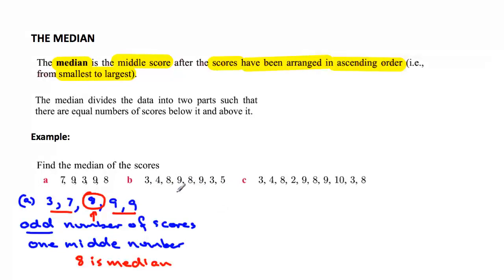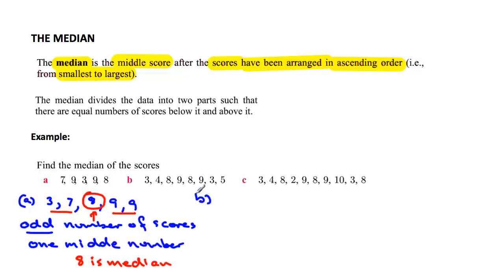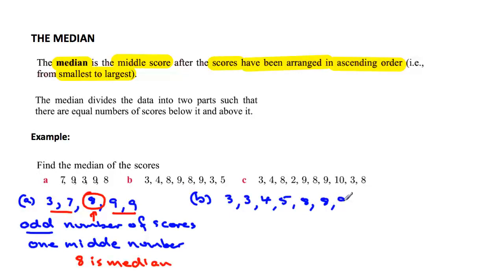Let's have a look at these ones here. Once again these are not in order, so you can't do anything with them until we get them in order. We'll arrange them: 3, 3, 4, 5, 8, 8, 9, and 9. Now we're going to cross off the scores from each end because we want the middle score. Let's take 3 scores off here and 3 scores off here, and you'll notice that there are 2 numbers left.